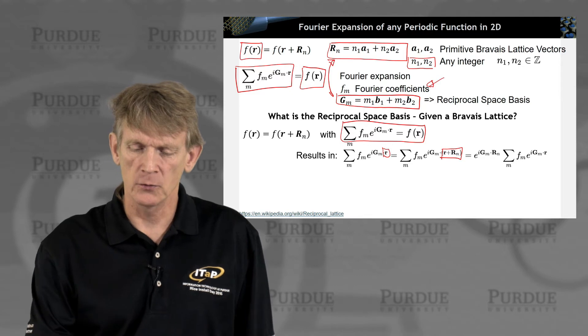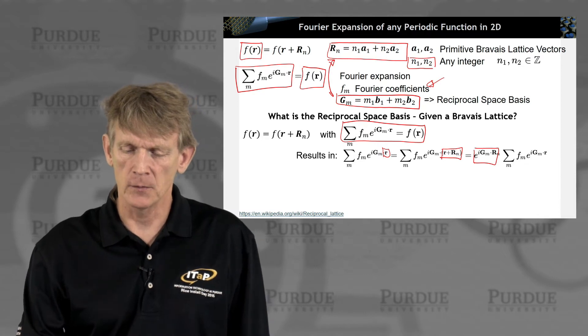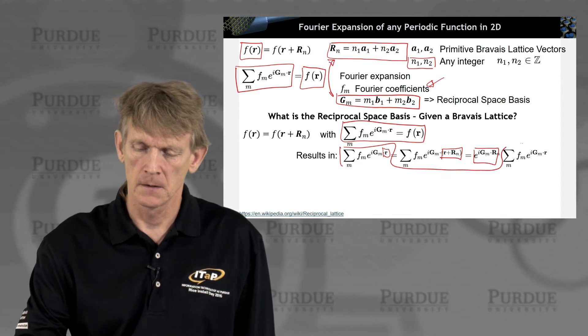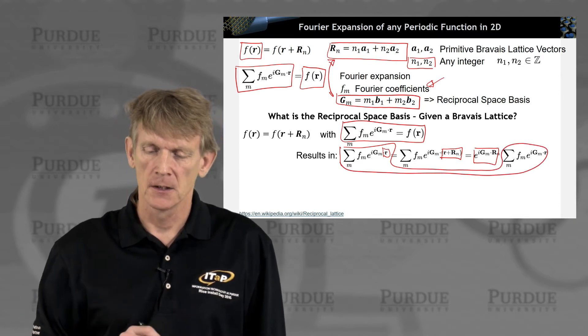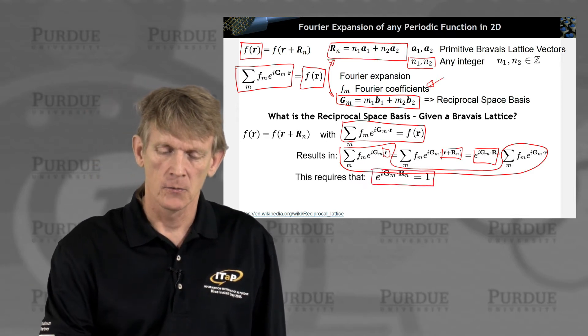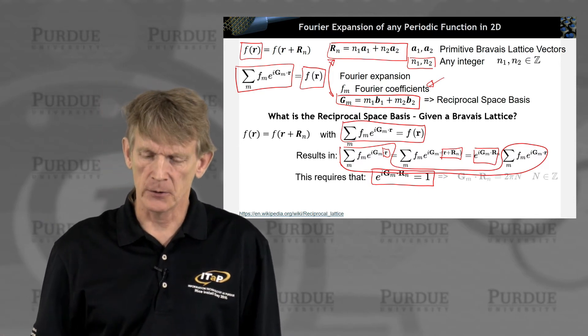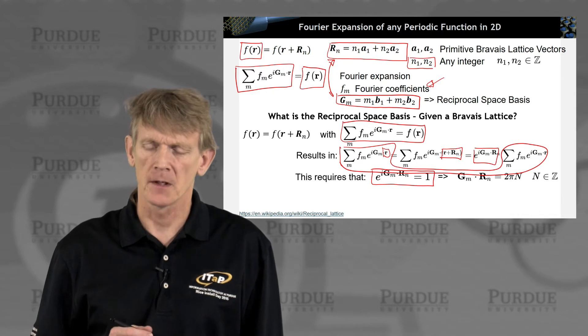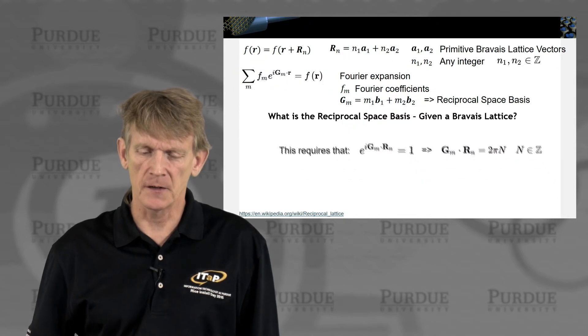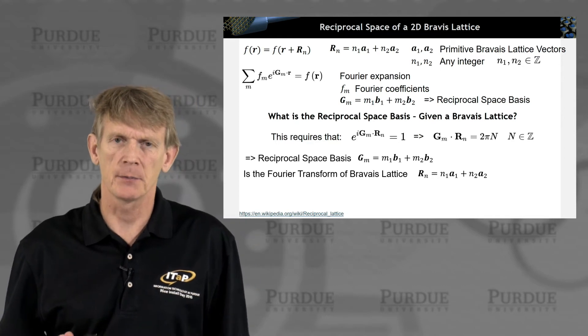Well, if that's true, we can pull out this term i gm · rn out of the sum, and we end up seeing this is the same term here and here. So that means that this exponential with a dot product between the two vectors must be 1. That means the dot product of these vectors must be 2π n, where n is any integer. So that really defines one critical criterion between these reciprocal spaces.